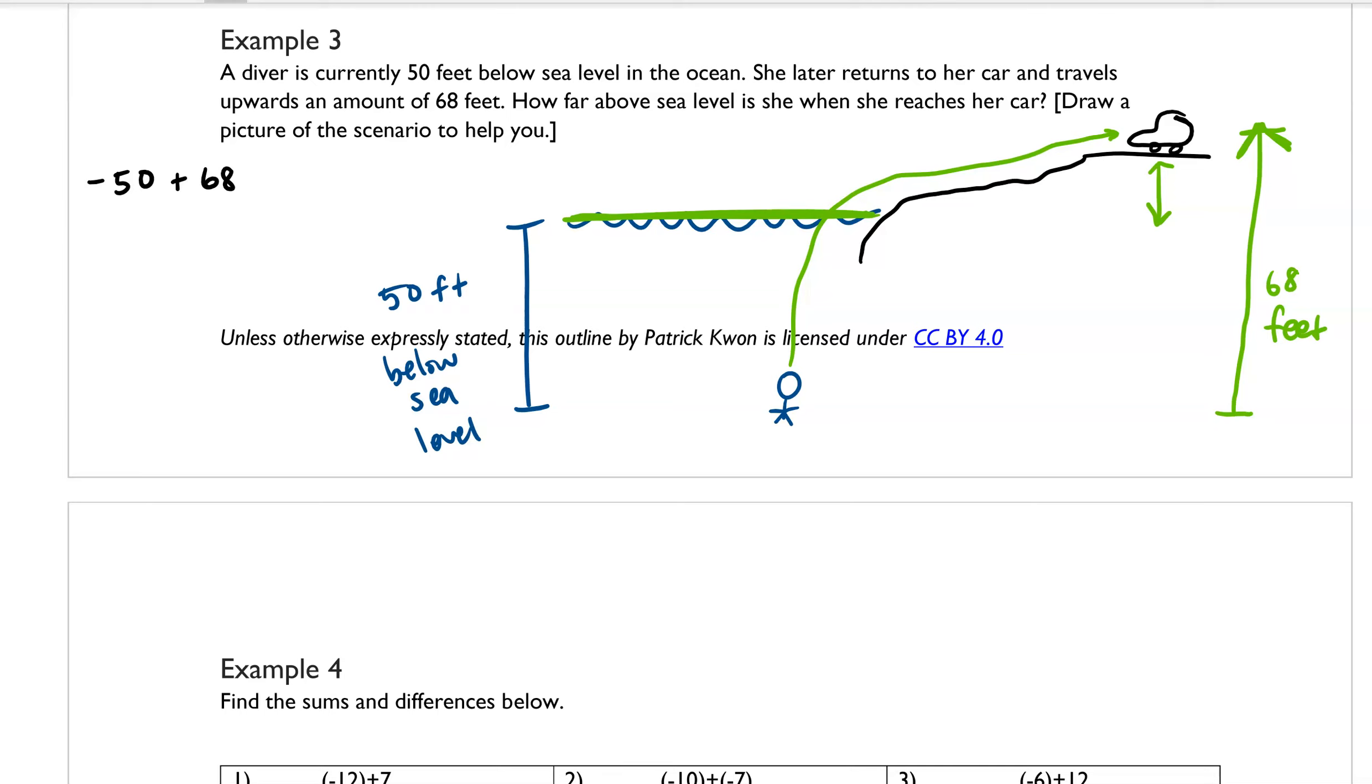And the difference between 68 and 50 is 18. And it's above, so that number is going to be positive. So our final answer, we would say she ends up at 18 feet above sea level.